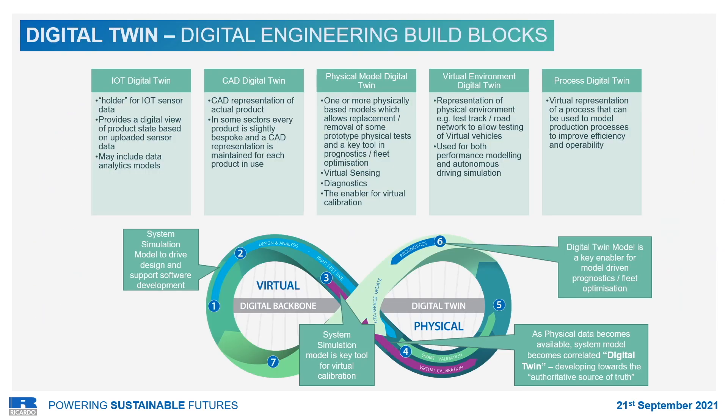A digital twin is comprised of a set of building blocks, which include the Internet of Things digital twin, where smart sensors collect and upload data that provide a view of the state of the product, as well as software data analytics. The CAD digital twin incorporates the actively maintained CAD representation of the physical product. The physical model digital twin incorporates the physics-based models of the product.